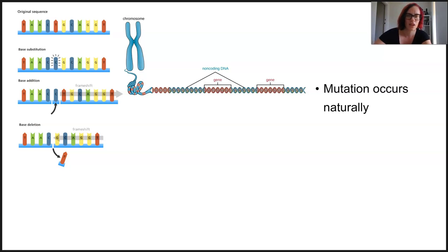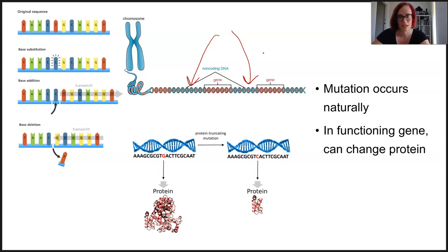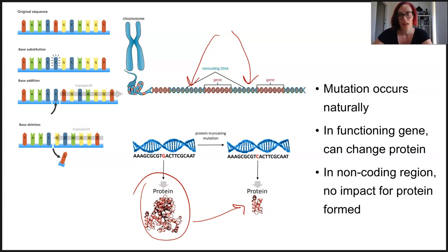If a mutation occurs in a non-coding region, it's not going to produce a protein, so sometimes those mutations go unnoticed. It's not going to impact any protein, and so it's called a neutral mutation. Even if there is a mutation in a gene, in those neutral mutations in a non-coding region, there is going to be very little or no impact because it's not coding for a protein.